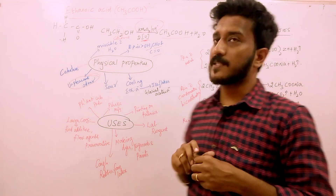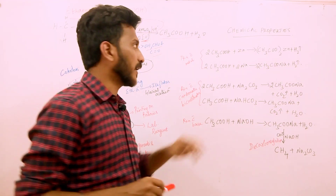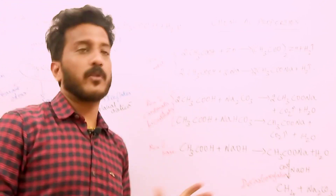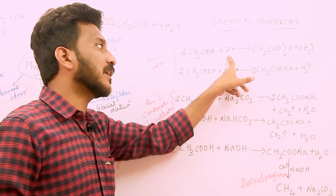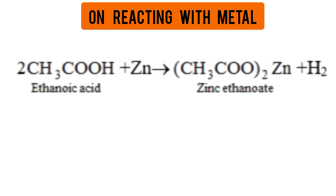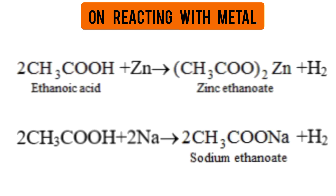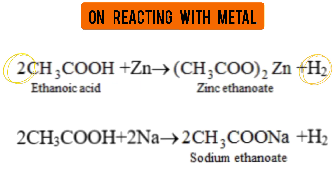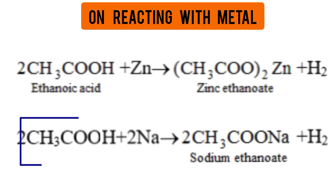Now, Chemical Properties of Ethanoic Acid. First, reaction with metals — two examples: Zinc and Sodium. Ethanoic Acid reacts with Zinc to form Zinc Ethanoate, and with Sodium to form Sodium Ethanoate. We have two molecules, so Zinc replaces hydrogen, giving two molecules of CH3COO and liberation of hydrogen gas.